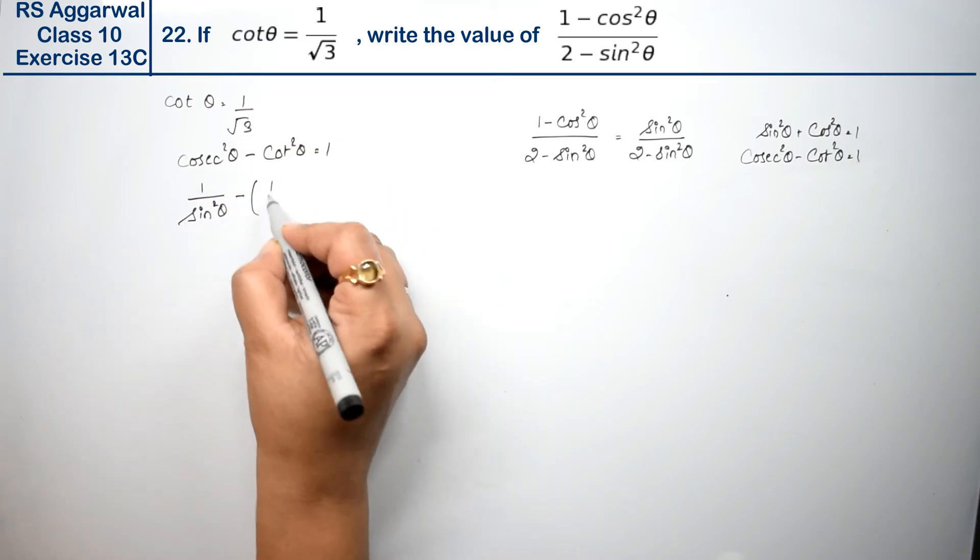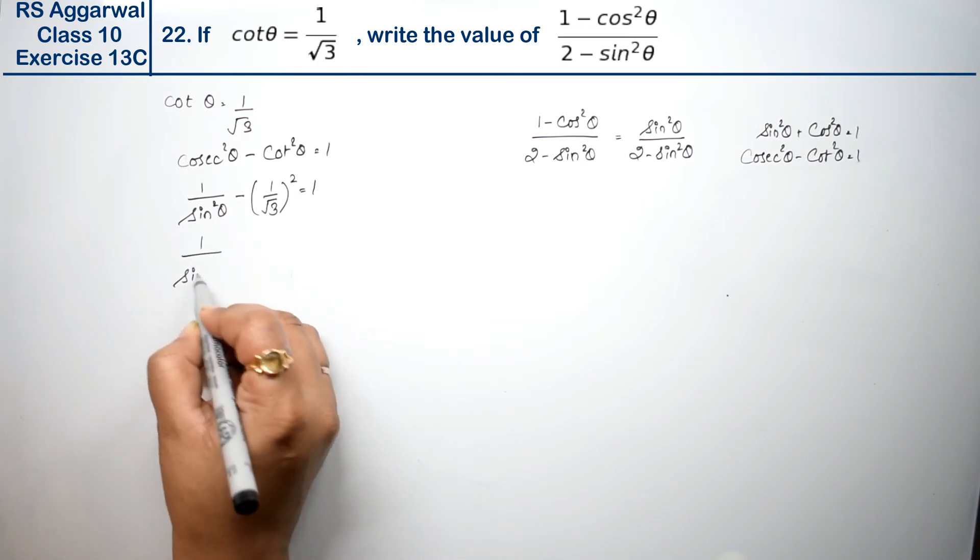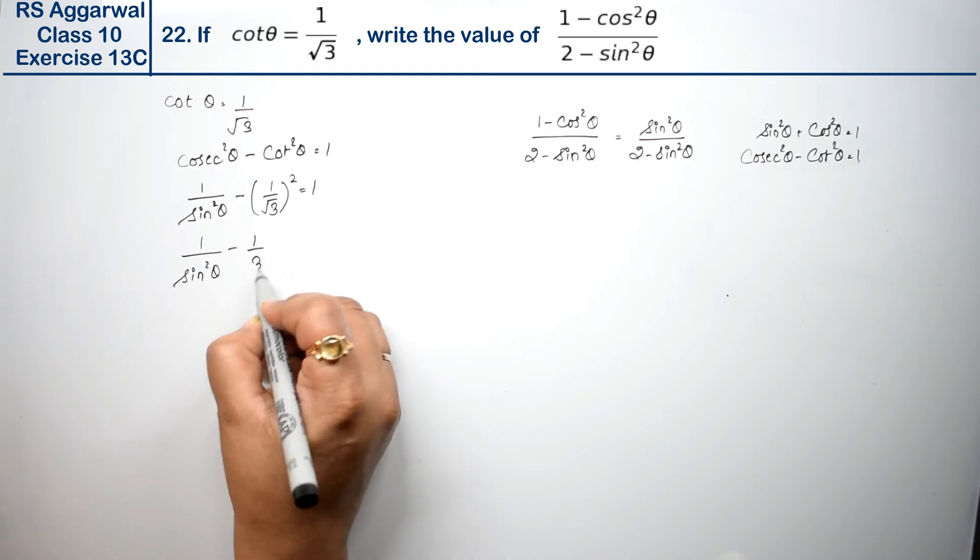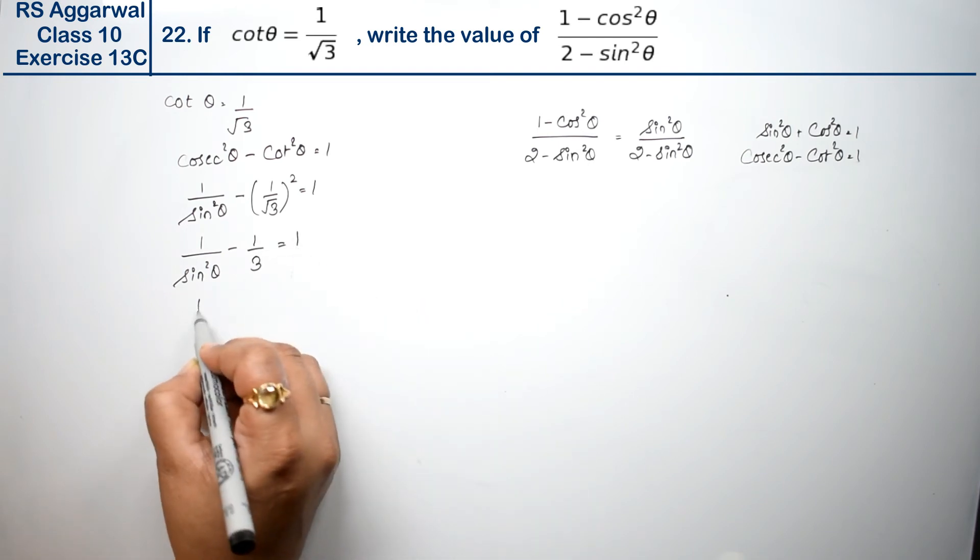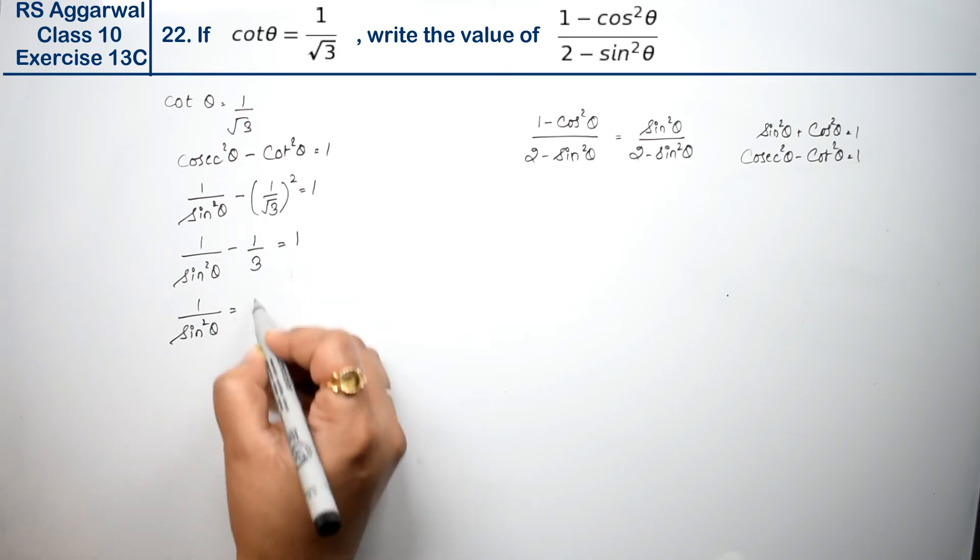Minus cot θ, we can write as (1/√3)² = 1. So 1/sin²θ - 1/(√3 × √3) = 1. So 1/sin²θ - 1/3 = 1.